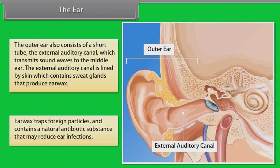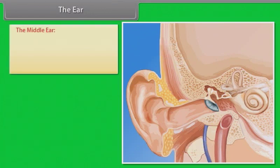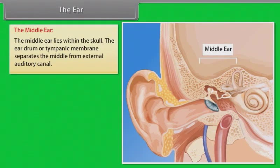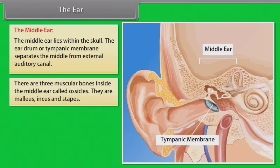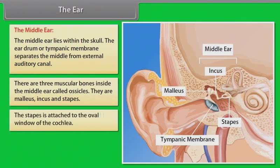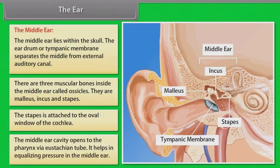The middle ear lies within the skull. The eardrum or tympanic membrane separates the middle ear from the external auditory canal. There are three small bones inside the middle ear called ossicles: the malleus, incus, and stapes. The stapes are attached to the oval window of the cochlea. The middle ear also opens to the pharynx via the Eustachian tube, which helps in equalizing pressure in the middle ear.